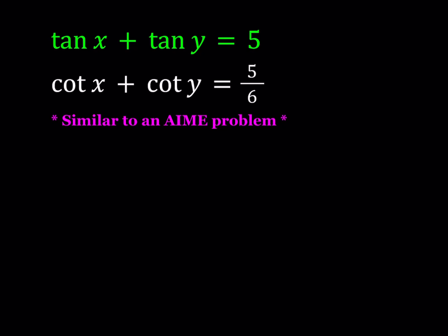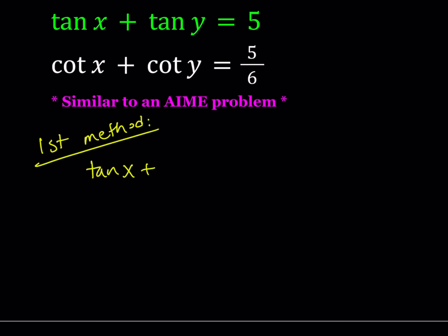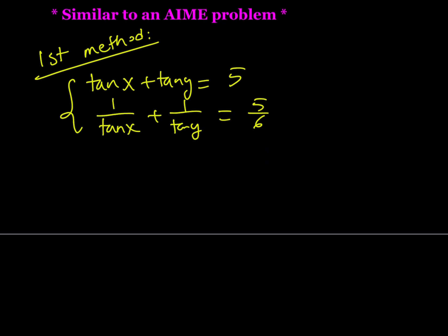Great. I'll be presenting two methods. Let's start with the first one. My first method basically involves using the reciprocal property of cotangent and coming up with an easily solvable system. We can write cotangent x as 1 over tangent x and 1 over tangent y, and that is going to be 5 over 6. This is a system and you can set tangent x equals a, tangent y equals b. You're going to get a plus b equals 5 and 1 over a plus 1 over b equals 5 over 6.